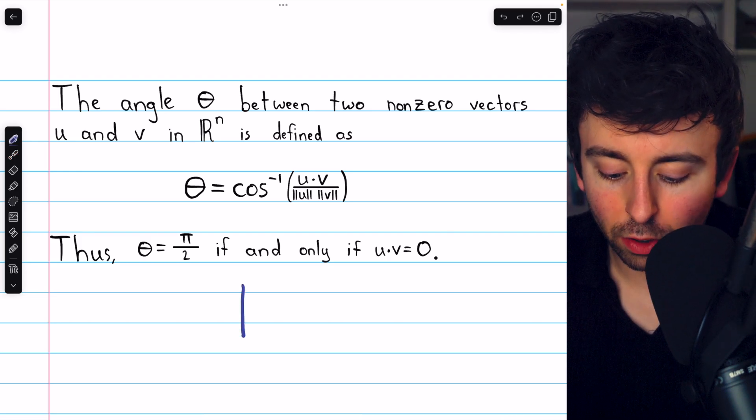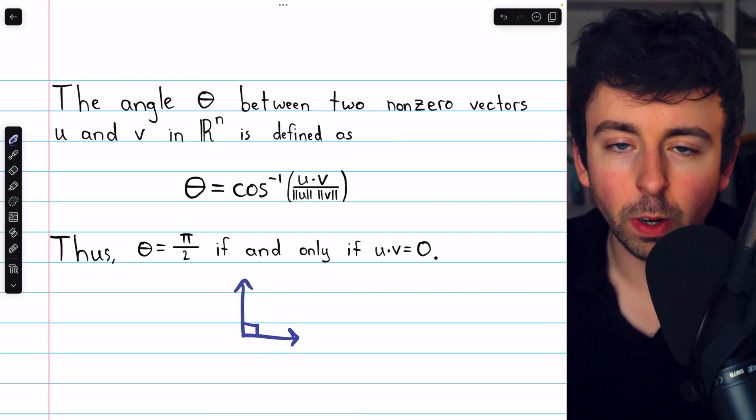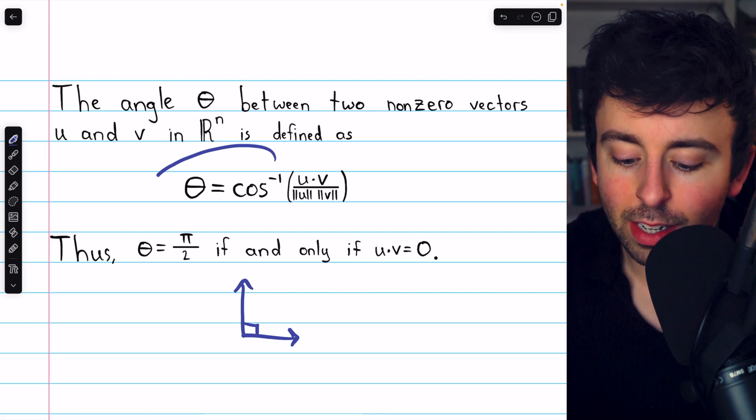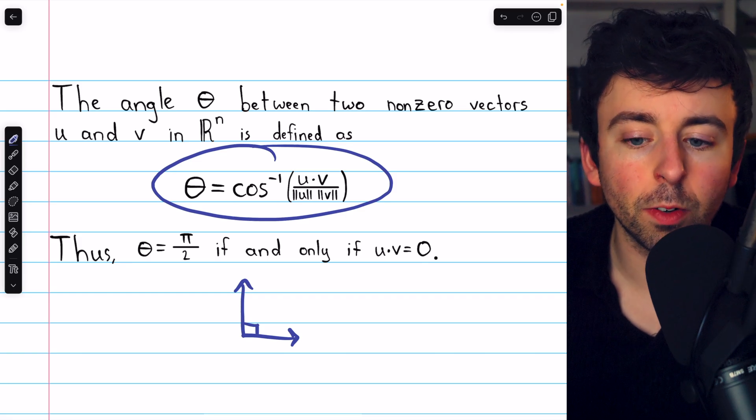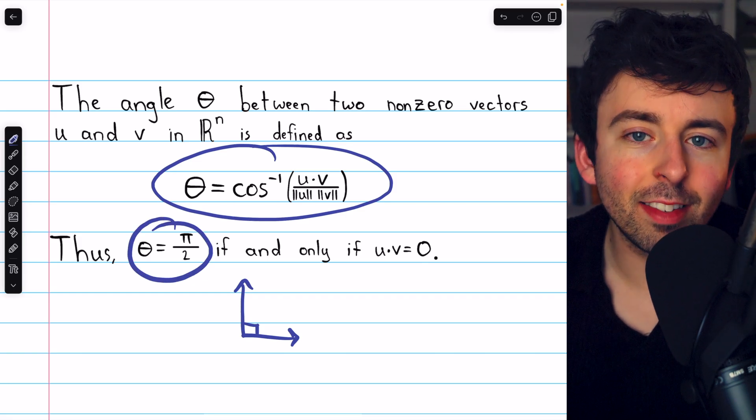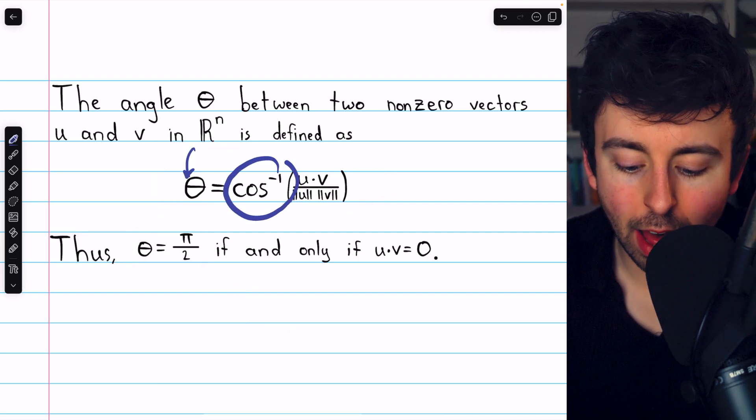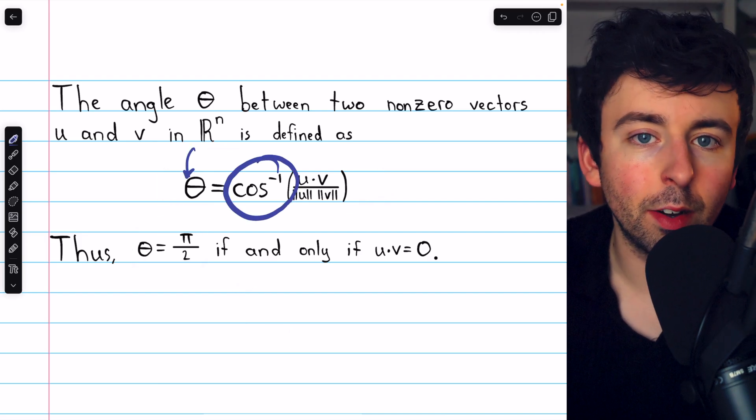Certainly, the angle between the vectors should be 90 degrees, or pi over 2. So then, we look at the definition for the angle between the vectors, and ask, when is that angle pi over 2? Well, the angle between the vectors is defined as an inverse cosine function.